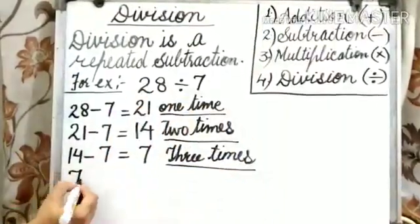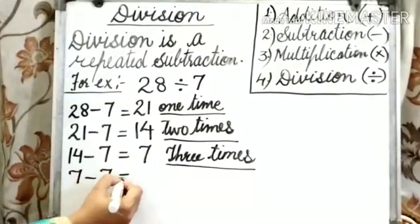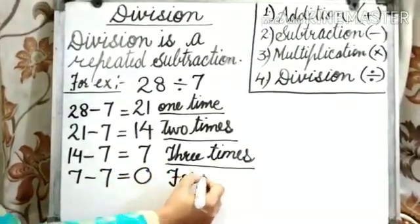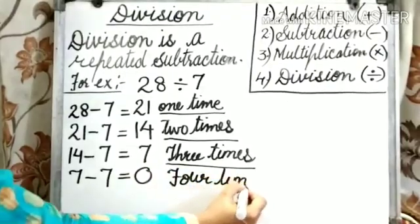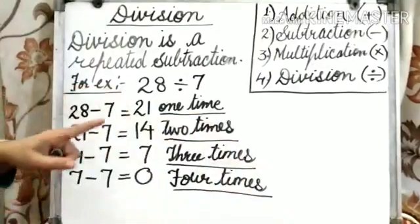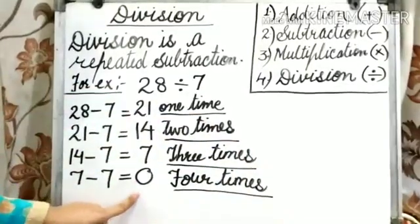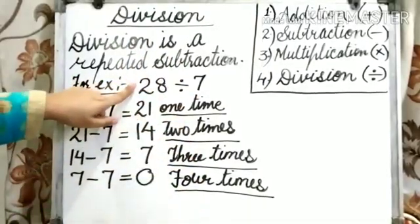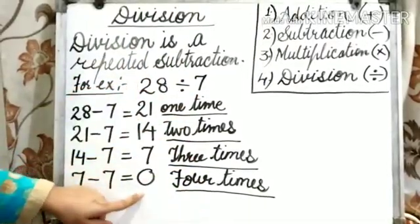Now, 7 minus 7 is equal to 0. Here, we have subtracted 7 four times from 28 to reach 0.